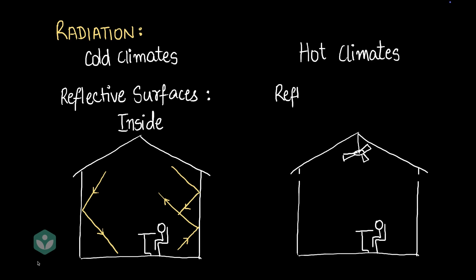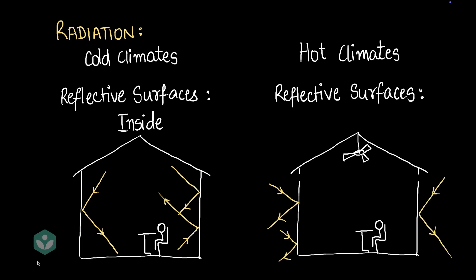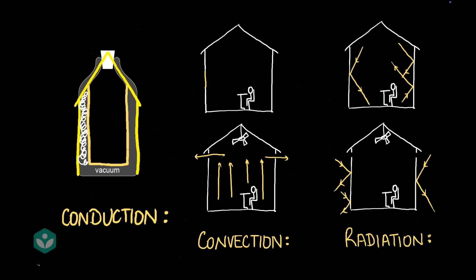What about hot climates? Well, we could keep reflective surfaces on the outside of the house, and that would help keep all the heat outside. Okay, so we were able to look at minimizing heat loss through conduction, convection, and radiation in house construction.